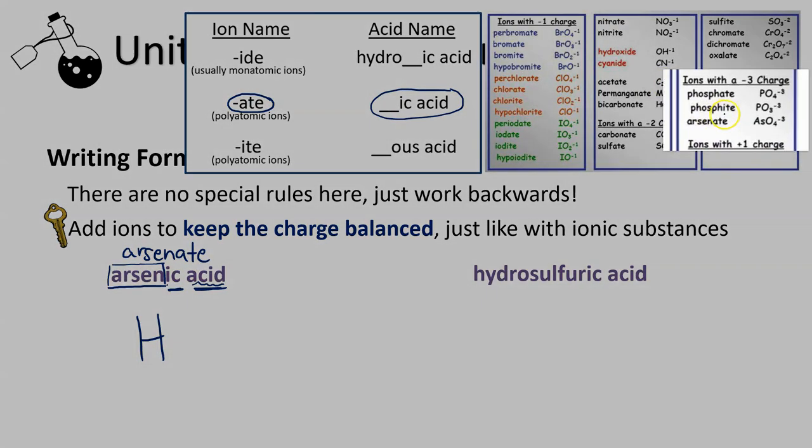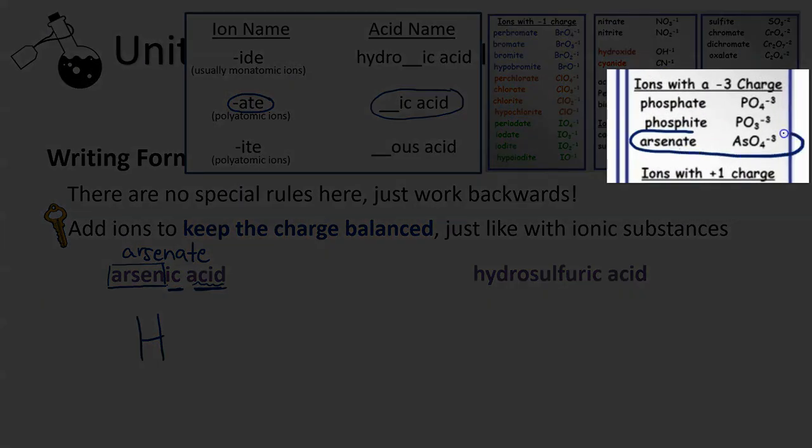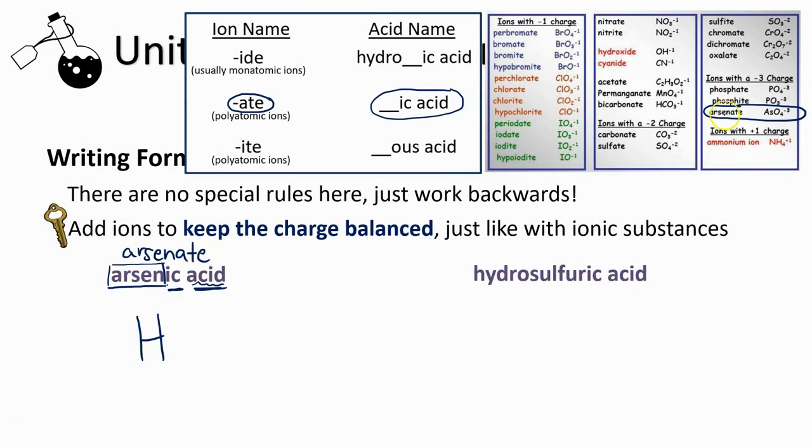And look it up. There's arsenate right there: AsO4. So that's what I mean by using the acid naming rules backwards to figure out the type of ion that is with your hydrogen.